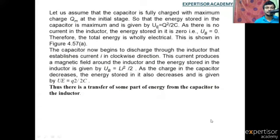Let us assume that the capacitor is fully charged with maximum charge Qm at the initial stage, so that the energy stored in the capacitor is maximum and is given by Ue = Q squared by 2C. As there is no current in the inductor, the energy stored in it is zero, UB = 0. Therefore, the total energy is only electric.